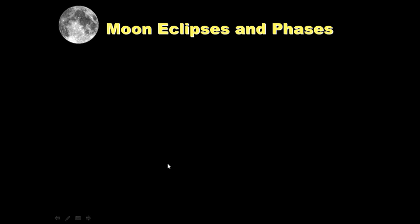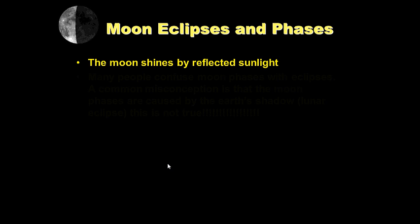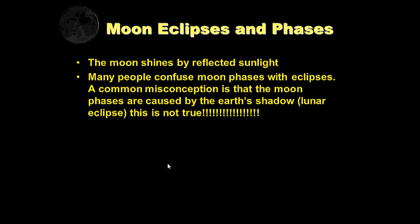Moon eclipses and phases. What's the difference here? Well the moon shines by reflected sunlight, right? The moon doesn't give off light. The moon appears to glow at night because it's reflecting light from the sun. Many people though confuse moon phases with eclipses. This is a huge misconception. A common misconception is that the moon phases are caused by the earth's shadow or a lunar eclipse. This is not true.